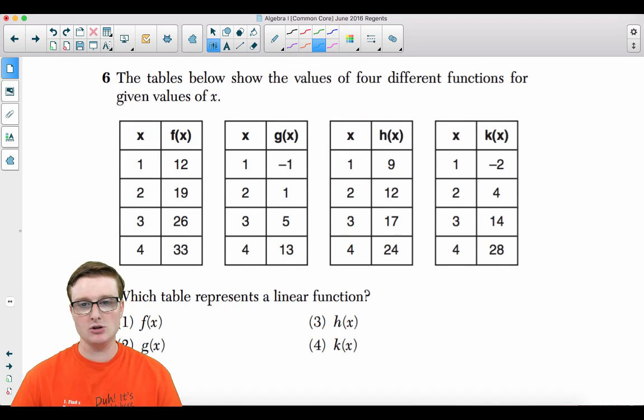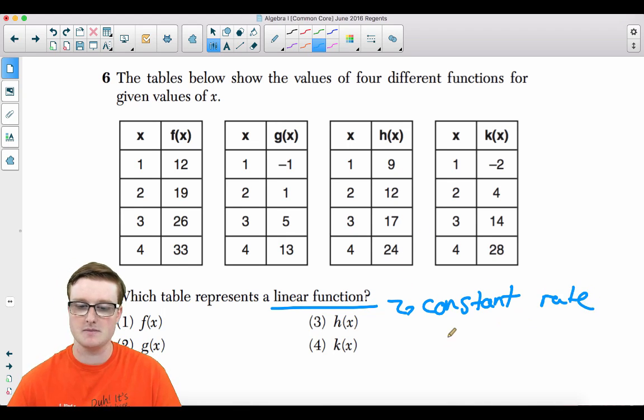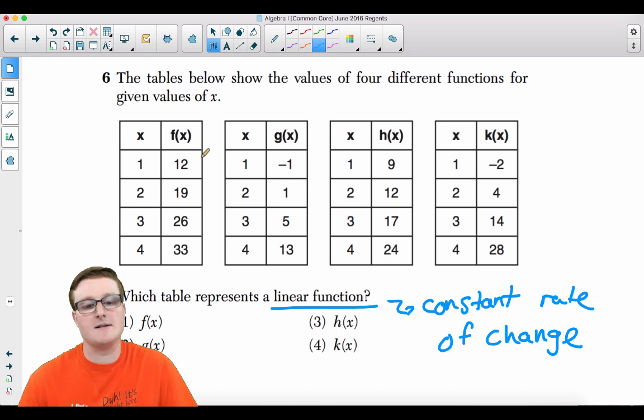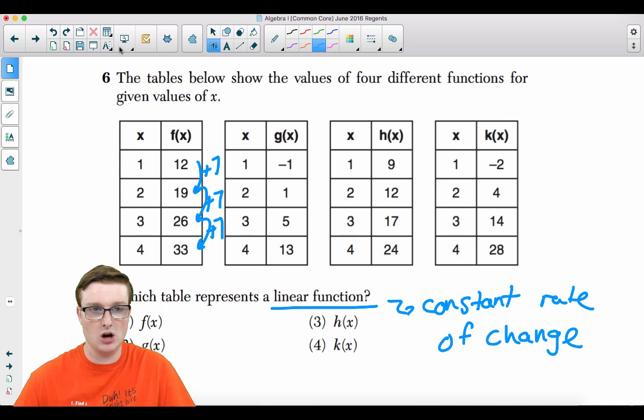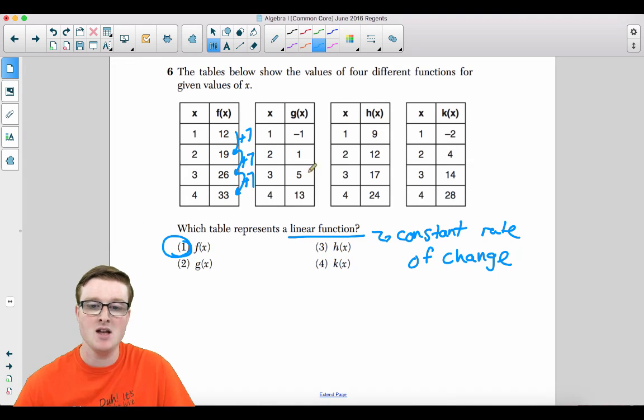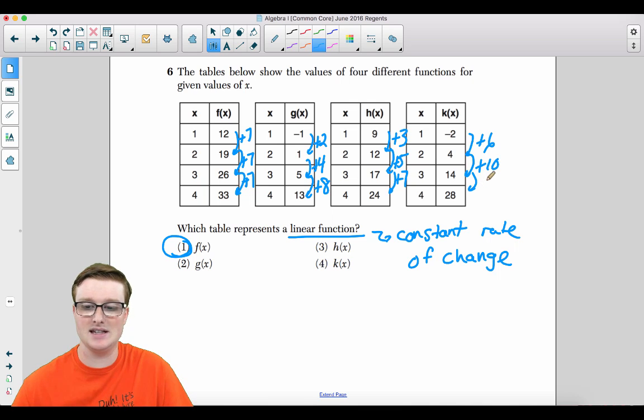Moving on to number six. The table below shows the values of four different functions for the given values of X. Which table represents a linear function? Remember, linear function means a constant rate of change. The slope is not changing. Let's take a look here. This is increasing by the number seven, 12 to 19, 19 to 26 is increasing by seven, 26 to 33 is increasing by seven. So your answer has to be F of X. F of X is your linear function. All of these, you're increasing by two, then you're increasing by four, then it looks like you're increasing by eight. This is increasing by three, increasing by five. This is increasing by six, increasing by 10, and then increasing by 14. Your answer is going to be choice one.